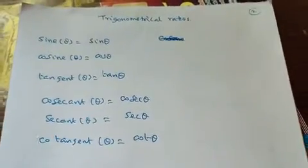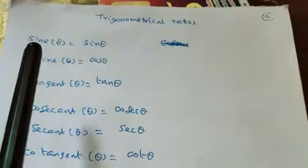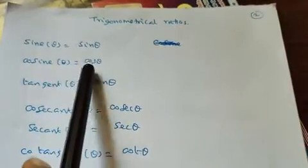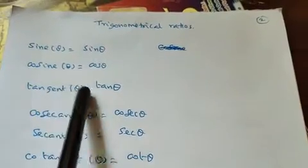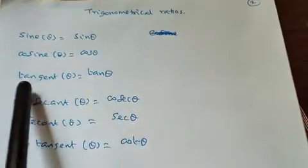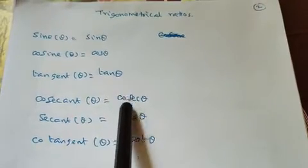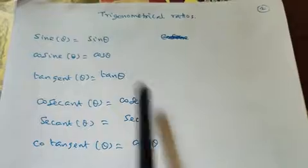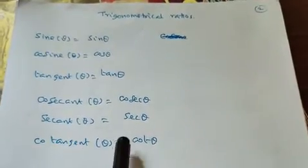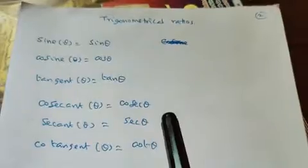We are going to see Trigonometrical Ratios. There are 6 Trigonometrical Ratios. The six trigonometrical ratios are: sin, cos, tan, cosec, sec, and cot — and cot theta.